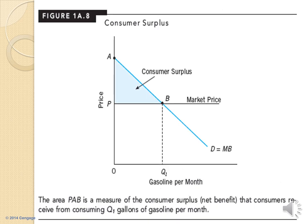Consumer surplus is the difference between the marginal benefit for the quantity the consumer gets and its market price. When we pay the market price, it is our cost to obtain that quantity of gasoline, and we receive a marginal benefit from it. The difference between our cost as market price and our benefit as marginal benefit is the consumer surplus. The area BAB measures the consumer surplus — the net benefit that the consumer receives from consuming quantity Q1 of gasoline.